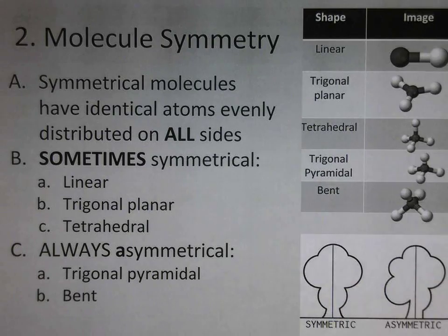There are several things we need to think about in order to determine if a molecule is polar or not. One of the things we need to think about is the symmetry of the molecule. Now we need to think about symmetry as symmetry in all directions.